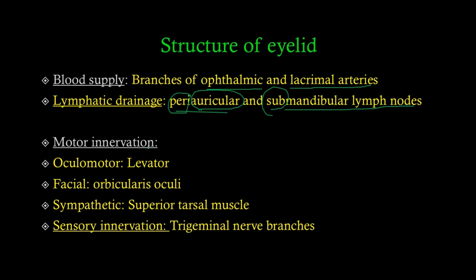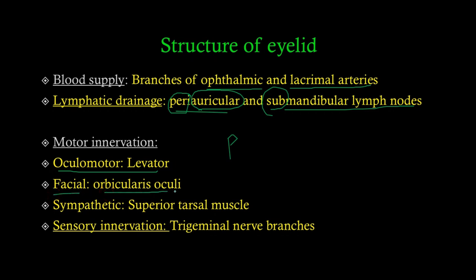Motor innervation is important because it relates to pathologies. Ptosis (p-t-o-s-i-s) is when the eyelid does not open properly, and it's a big indicator of certain pathologies. The oculomotor nerve innervates the levator muscle, which opens the eyelid. The facial nerve innervates the orbicularis oculi muscle. There is also sympathetic innervation supplying the superior tarsal muscle, also called Müller's muscle. We'll discuss these in detail when covering associated pathologies.